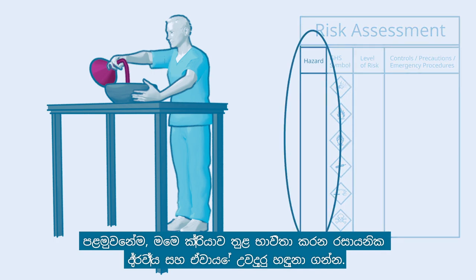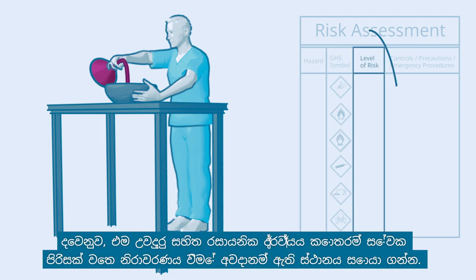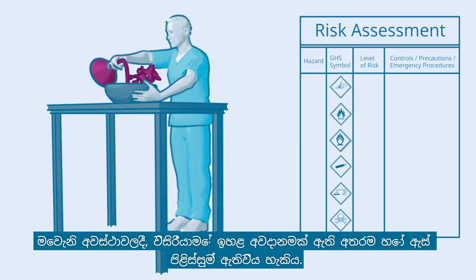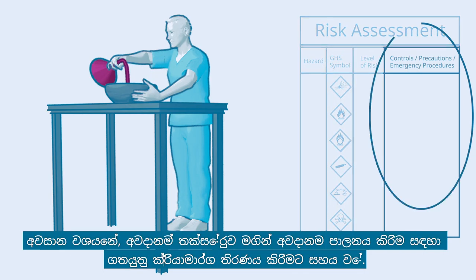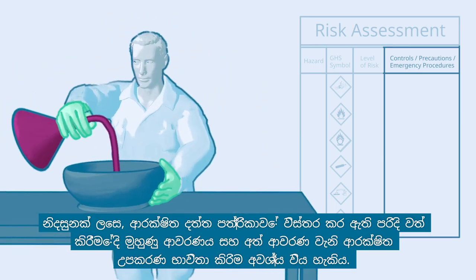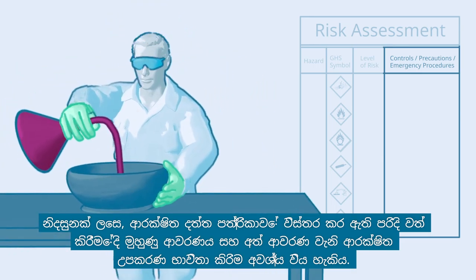First, identify the chemical substances used in this activity and their hazards. Second, locate which and how many workers are possibly at risk of exposure to that hazardous chemical. Next, identify the nature and level of risk of that activity. In this case, there is a high risk of splashing, which may cause skin or eye burns. Finally, the risk assessment helps to decide what actions to take for controlling the risk — for example, the worker may have to use protective equipment such as a face shield and gloves while pouring, as prescribed in the safety data sheet.